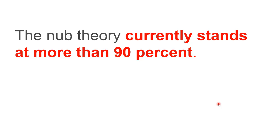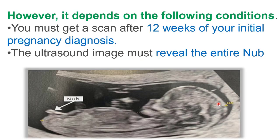The 20% false results were due to the fact that the ultrasound images were not clear, they were not showing the entire Nub, or some scans were taken before 12 weeks. So its accuracy depends upon the following conditions: you must get a scan after 12 weeks, the ultrasound image should be clear, it must be taken by an expert, and that image should reveal the entire Nub.